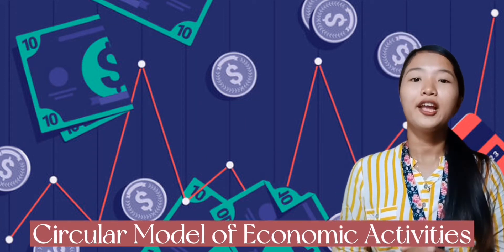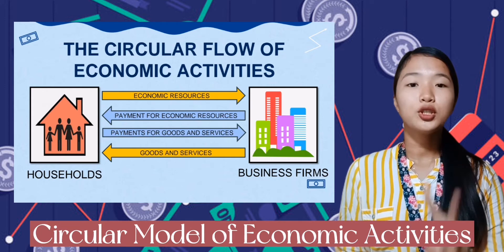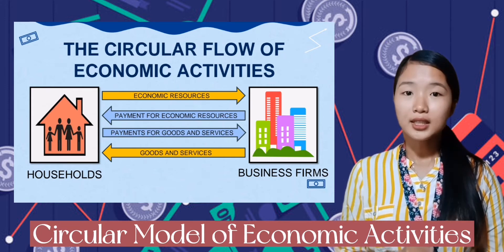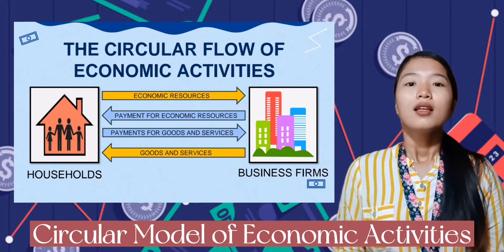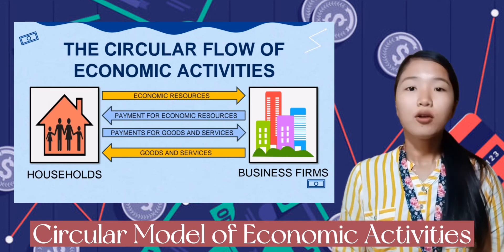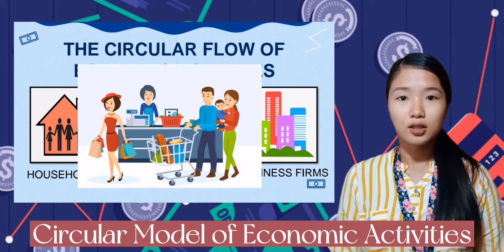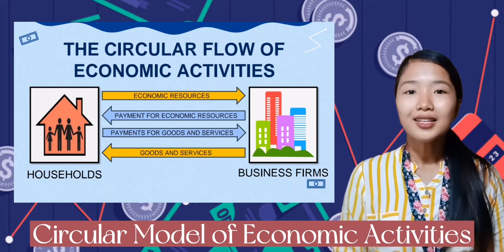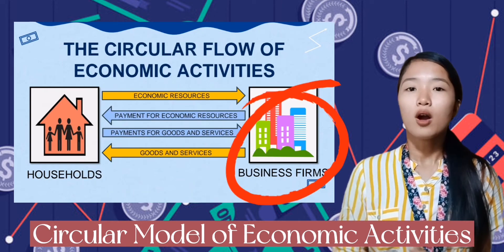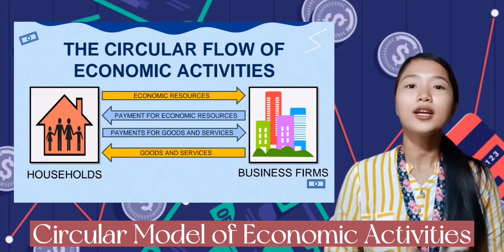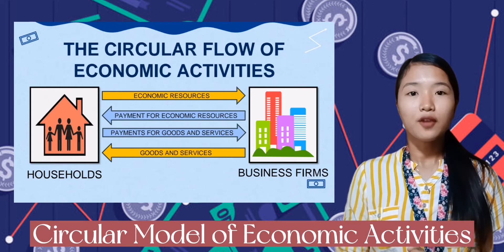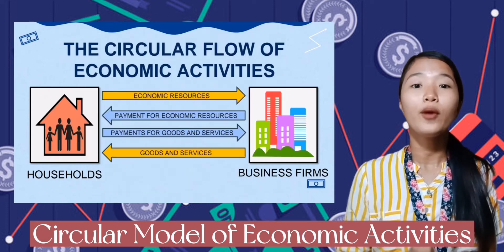Let's talk about how these two units work and function in the circular flow of economic activities. These two basic units need each other, as shown in the diagram. The household needs to purchase goods and services from the business firm — thus there is payment for those outputs. On the other hand, the business firm needs to acquire economic resources, for example in the form of labor and capital from the household — thus there is payment of inputs in the form of wages and salary.